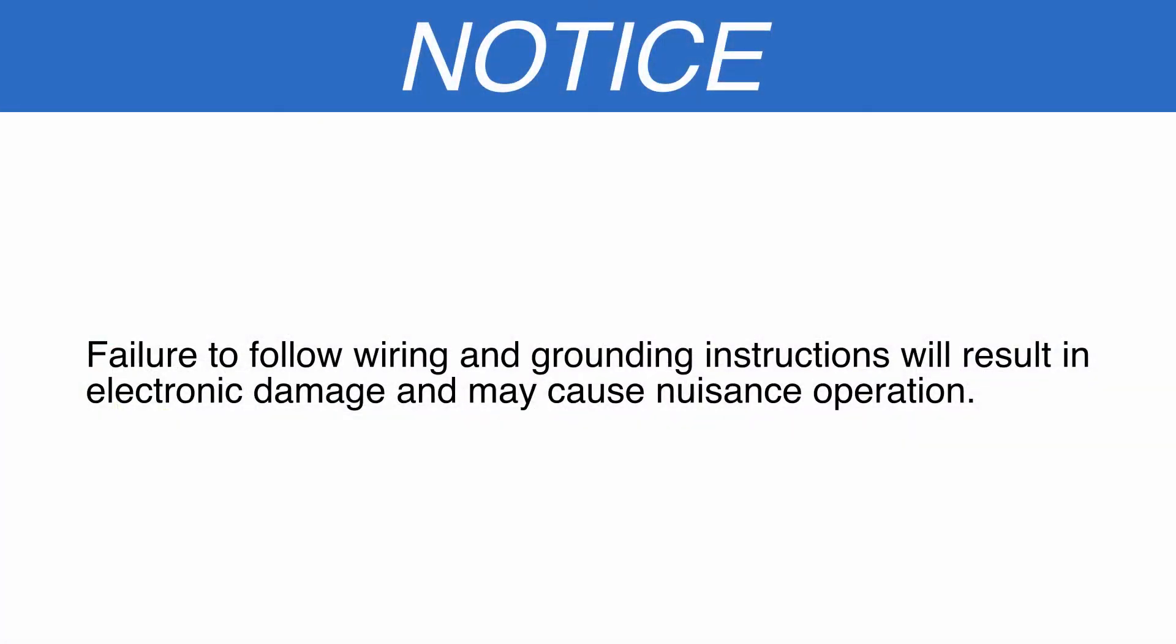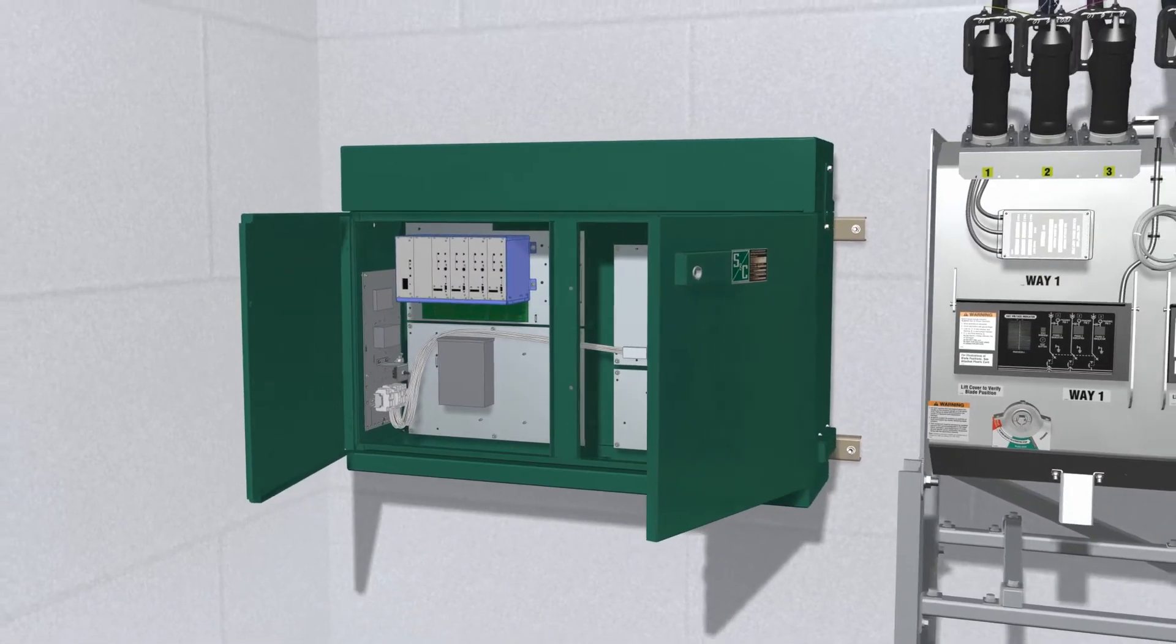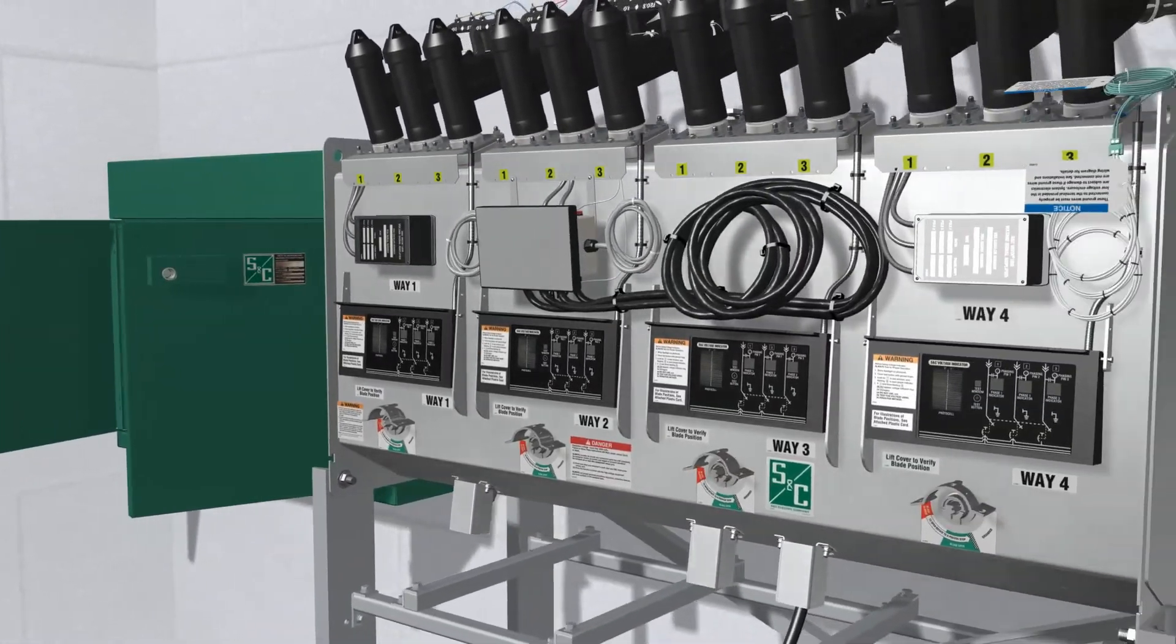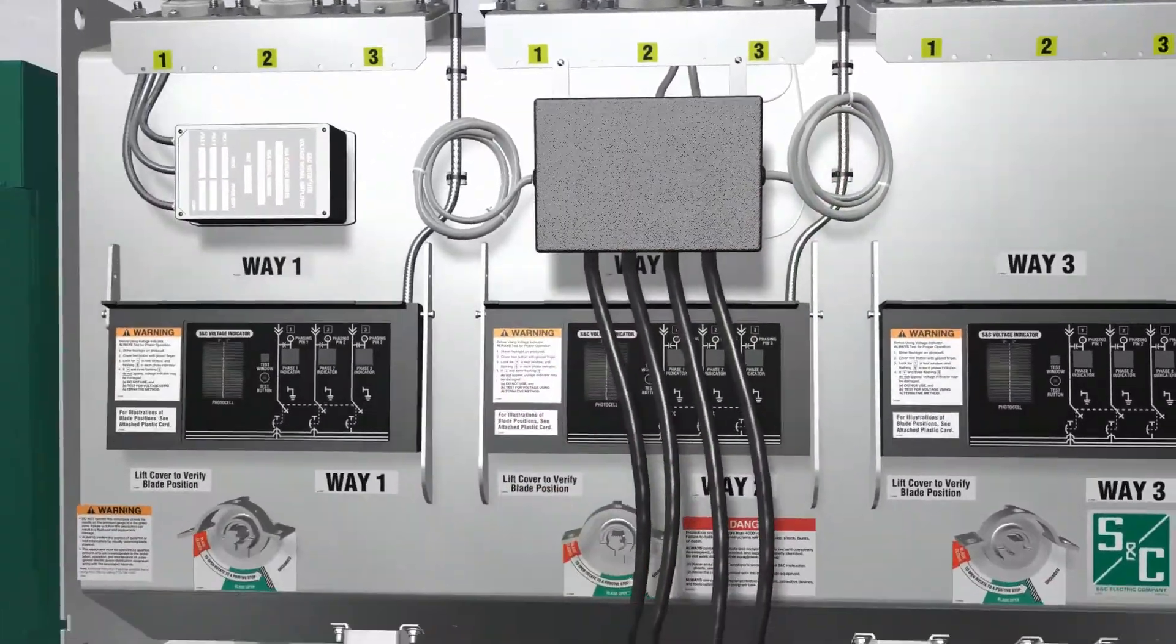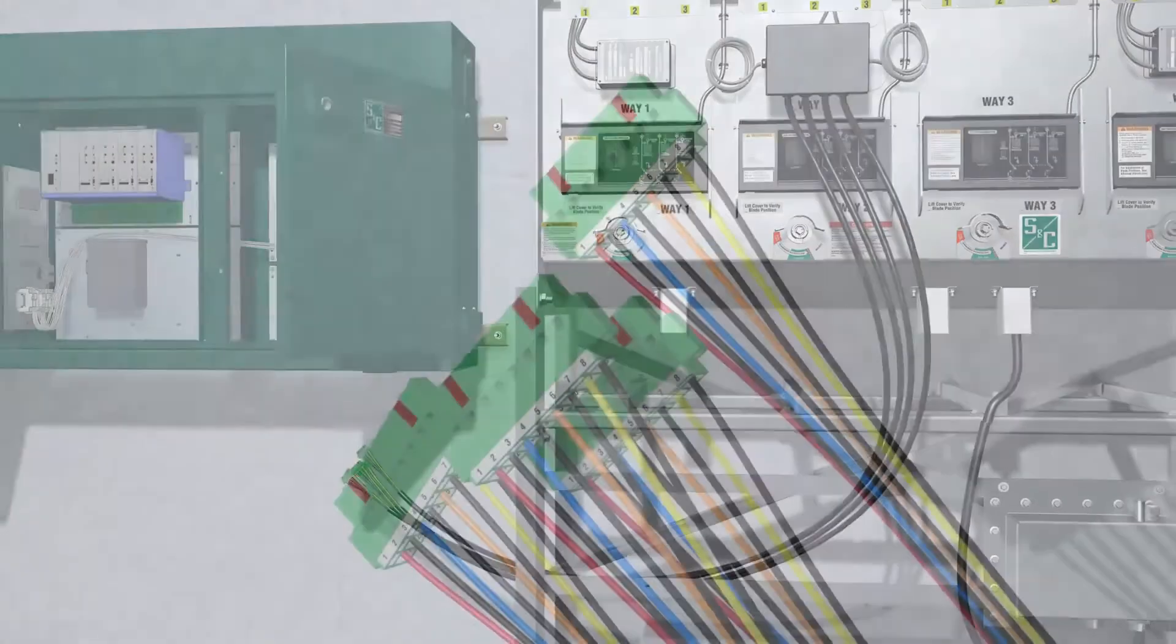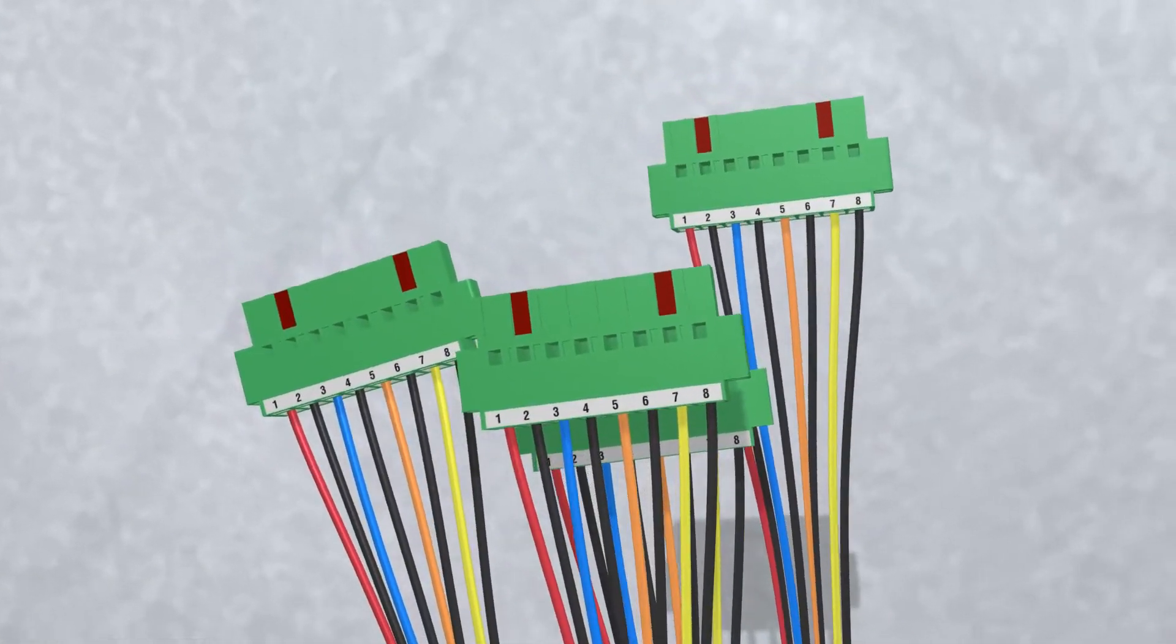Failure to follow wiring and grounding instructions will result in electronic damage and may cause nuisance operation. To route the low voltage compartment wiring for dry and wet vault-mounted style Vista switchgear, first uncoil the main cables that will be routed to the low voltage enclosure. These cables have low voltage connectors on their ends.